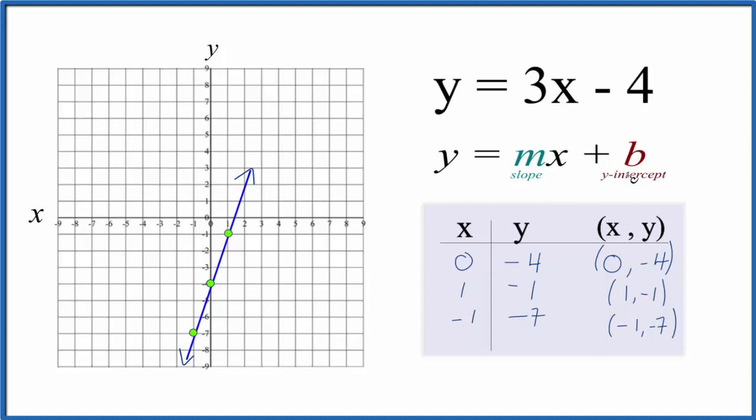So we have y equals mx plus b. b is the y intercept. That's negative 4. That's where our graph should cross the y-axis. So if we go to negative 4 right there, that's where our graph is crossing the y-axis.